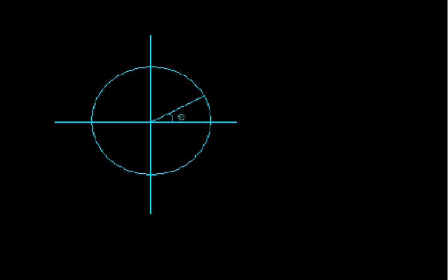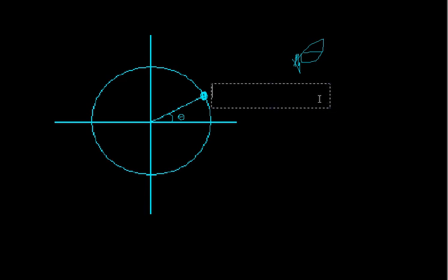Theta — that's theta right there, that circle with the line through it. So if you just kind of draw this line, wherever that line intersects the circle, right here, that point has some coordinates, x and y. You can write in coordinates: some x and some y.